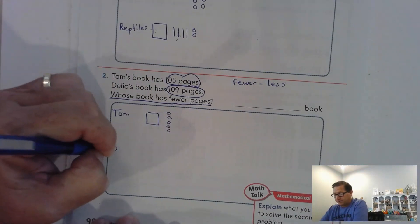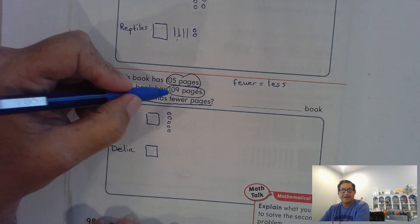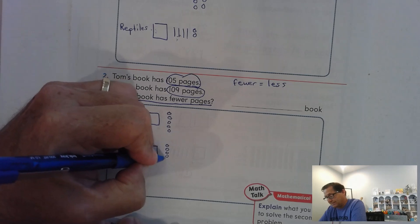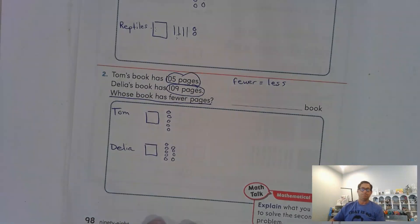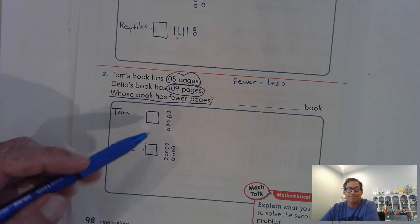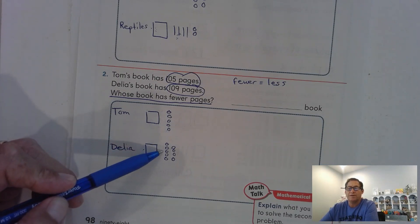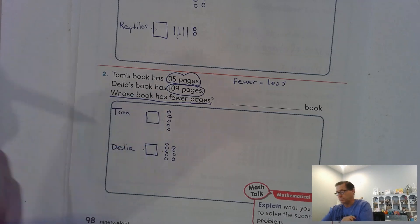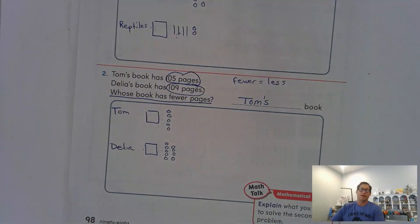Delia also has 100. She also does not have any tens, but she has nine ones. So we want the number that is the smallest value this time. So 100, 100, that are both the same. Here we have five ones and nine ones. Which one is less or fewer? Tom's, right? So 105 is less than 109.